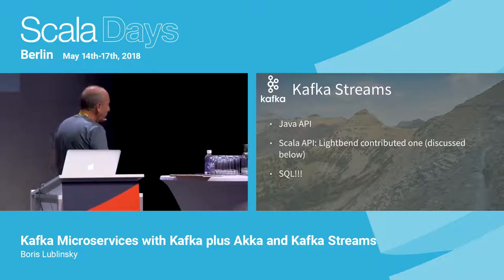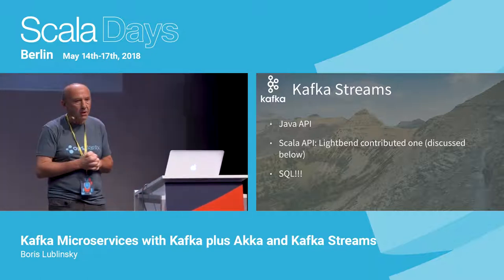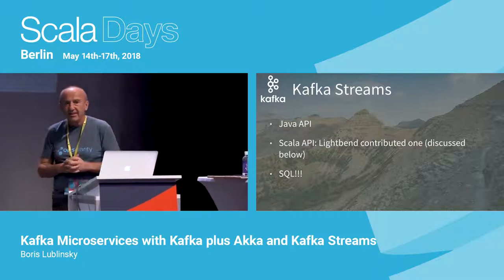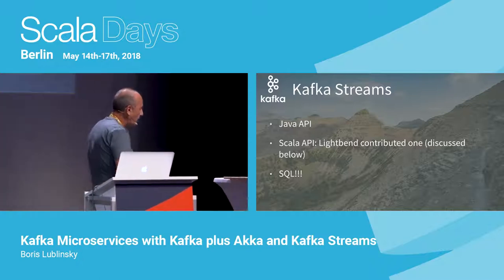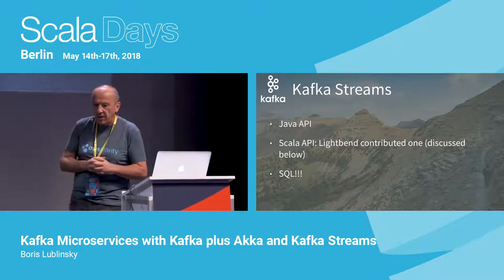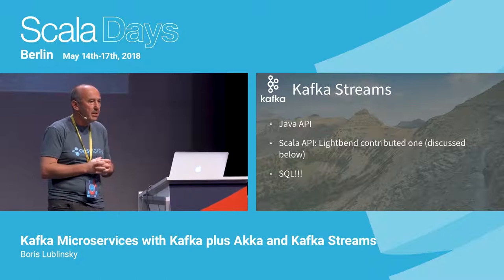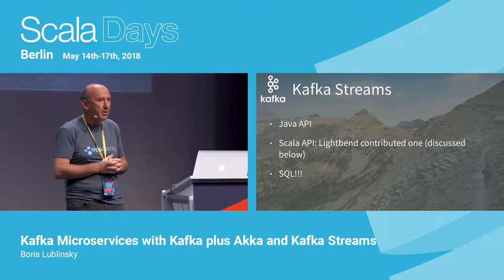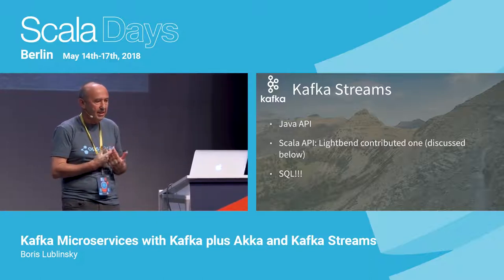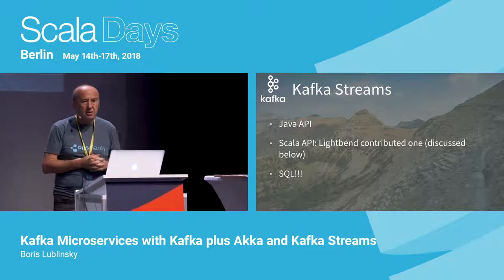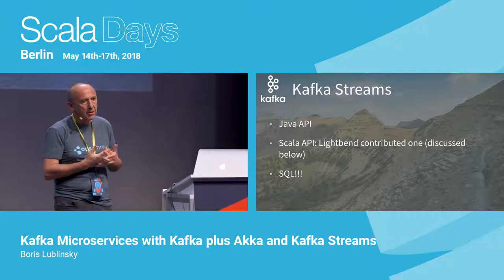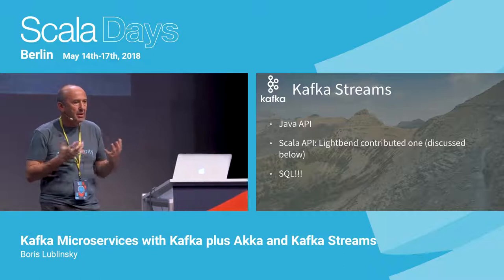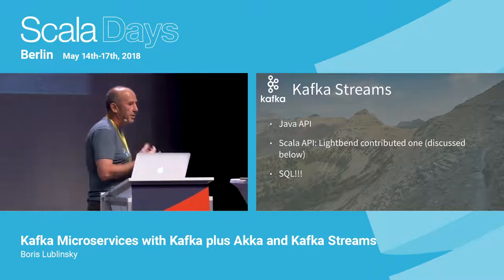Kafka Streams also has KSQL, which is a somewhat strange thing because SQL is widely adopted in many streaming engines — for example Spark Structured Streaming and Flink — where you can use SQL as a programming language to define your transformations instead of writing code. Kafka Streams decided to implement KSQL differently: you can't use SQL in your Kafka Streams applications; KSQL is a separate application where you can do SQL and nothing else. I would rather see them doing what Flink does.